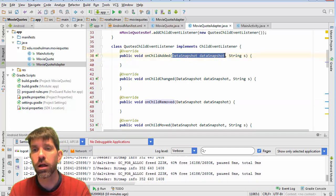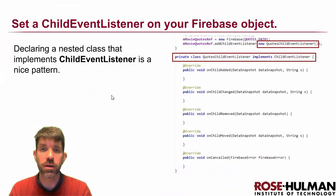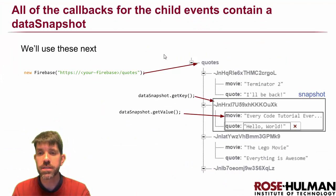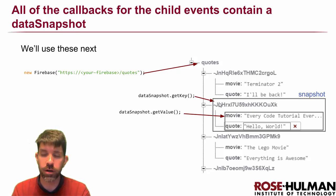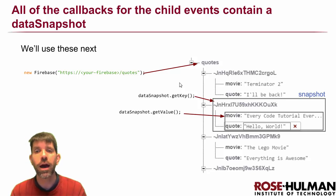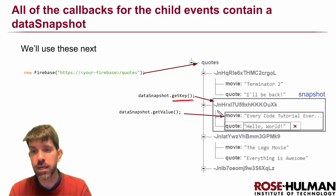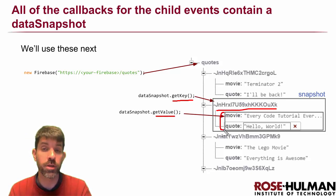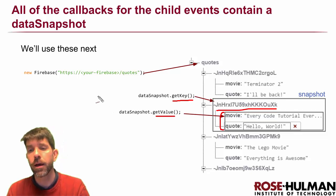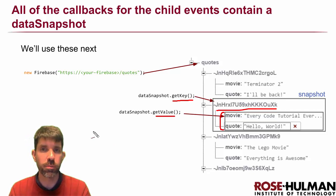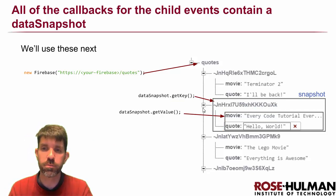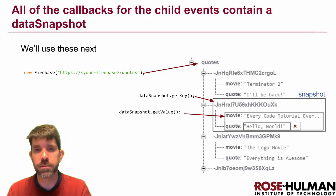You'll notice that the first parameter to all of these is a DataSnapshot. A snapshot is essentially just a key-value pair. When you're passed a snapshot — say you just pushed something to Firebase and it created a new one — it's going to give you a snapshot of the movie quote that was just created. You can get its key, the one created with push, and you can get its value, which is essentially our model object. For now, think of it as having getKey() and getValue() — those are the most important things.